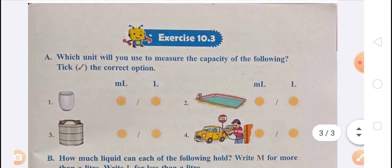Exercise 10.3, Question A: Which unit will you use to measure the capacity of the following? Tick the correct option. A glass holds water in ml, so tick ml. A swimming pool holds water in liters, tick liter. A tank holds water in liters, tick liter. A vehicle holds petrol or diesel in liters, so tick liter.